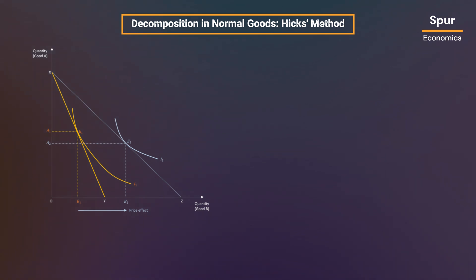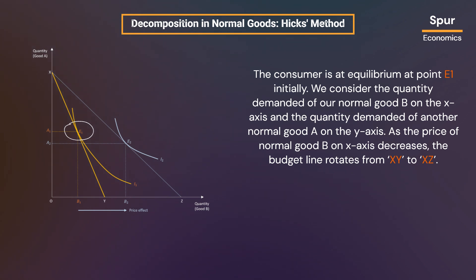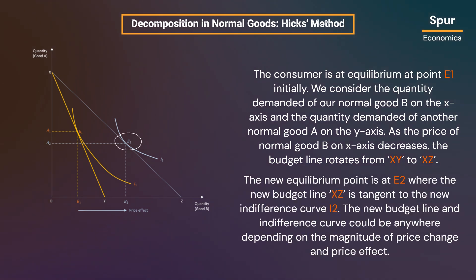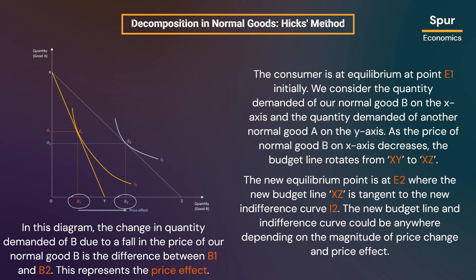Let us take a look at the diagram shown here. The consumer is at equilibrium at point E1 initially. We consider the quantity demanded of our normal good B on the x-axis and the quantity demanded of another normal good A on the y-axis. As the price of normal good B on the x-axis decreases, the budget line rotates from XY to XC. The new equilibrium point is at E2 where the new budget line XC is tangent to the new indifference curve I2. The change in quantity demanded of B due to a fall in the price of normal good B is the difference between B1 and B2. This represents the price effect.